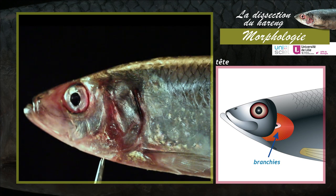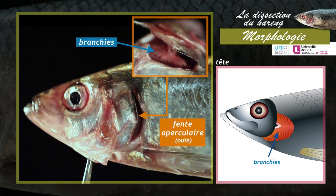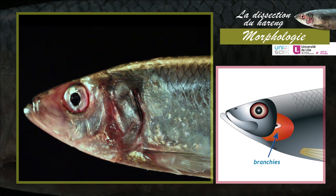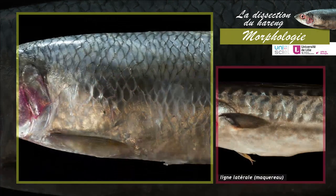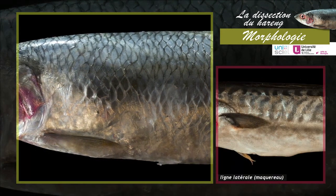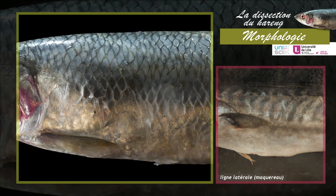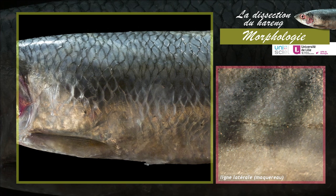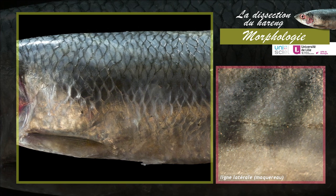La fente operculaire permet la sortie de l'eau lors de la respiration. Le hareng ne possède pas de ligne latérale, un organe sensoriel présent chez la plupart des téléostéens.